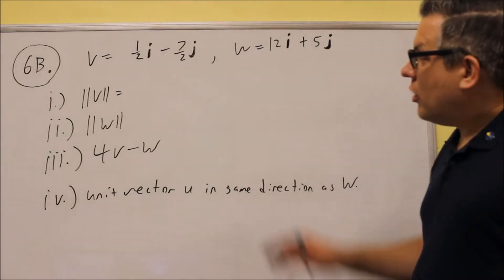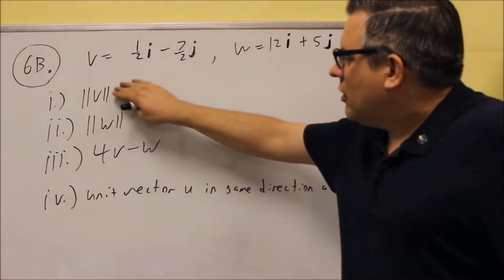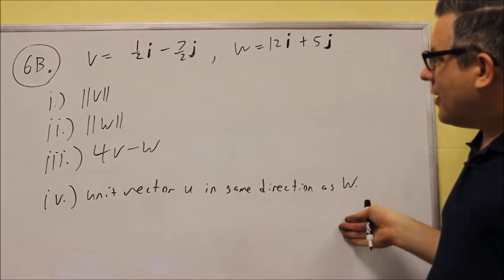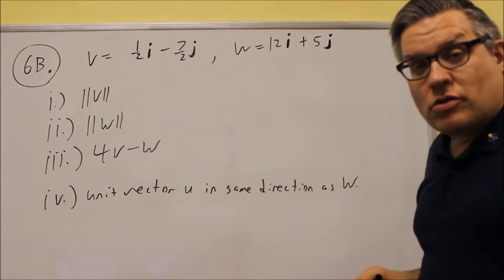Okay, for 6b, we have another one where we want to find all these different pieces here, and then they give us two new vectors.